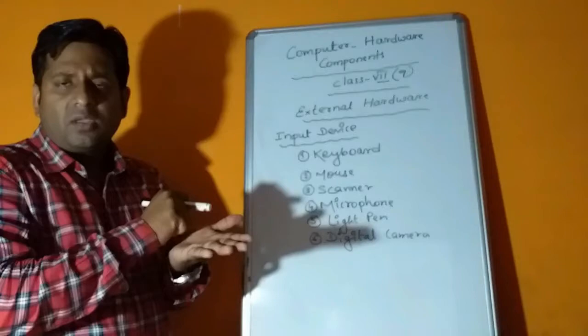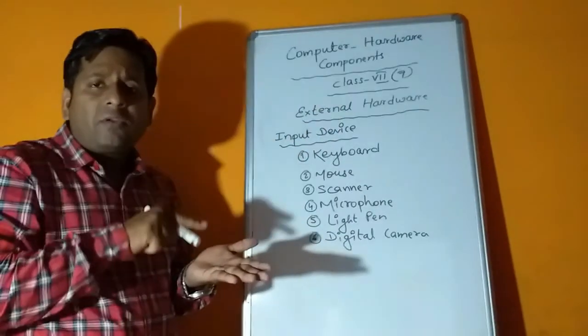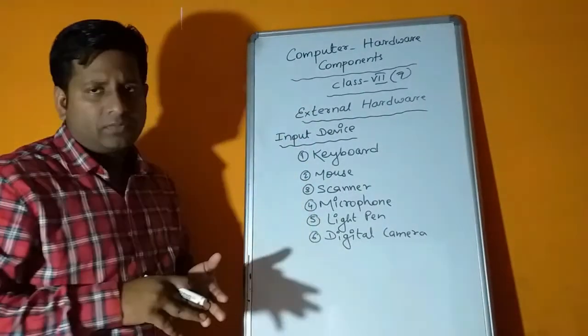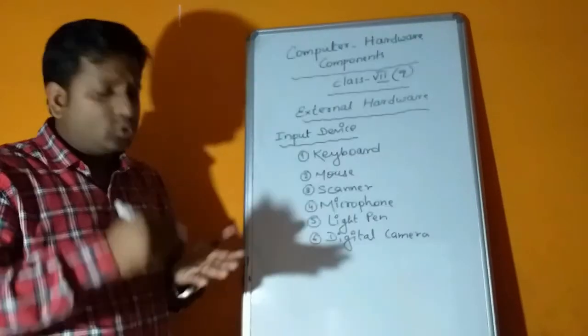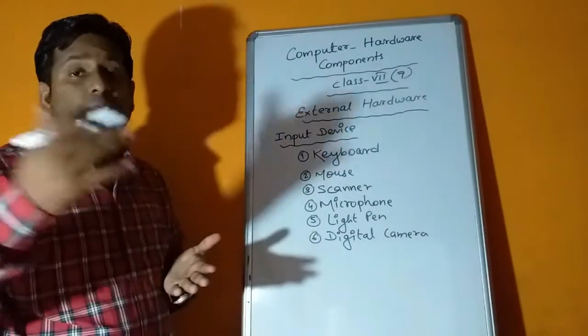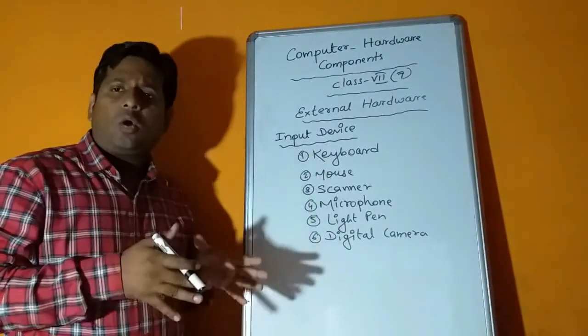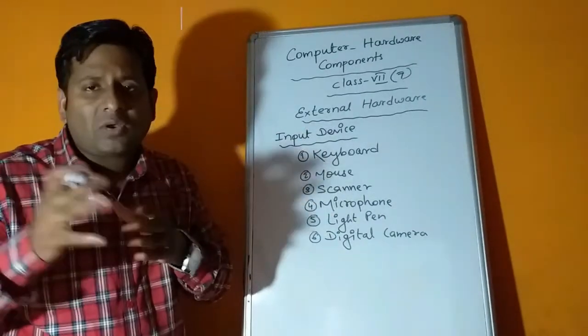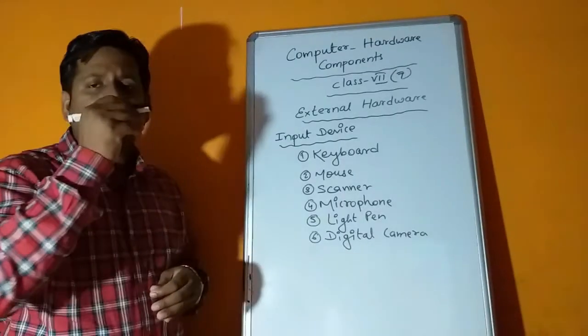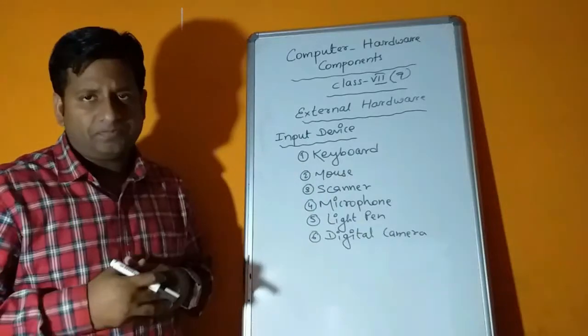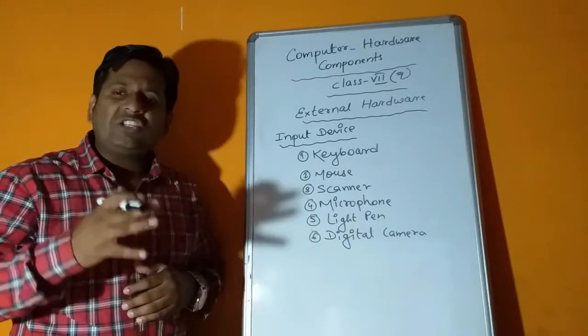Then comes light pen. Drawing with mouse is difficult because we need to move the mouse on a flat surface and the cursor moves accordingly, and creating a perfect image is tough. But when I give you a pen or pencil to draw on paper, that is easier. Based on this concept, light pen was introduced. With the help of light pen we can draw the object directly on the screen or monitor.